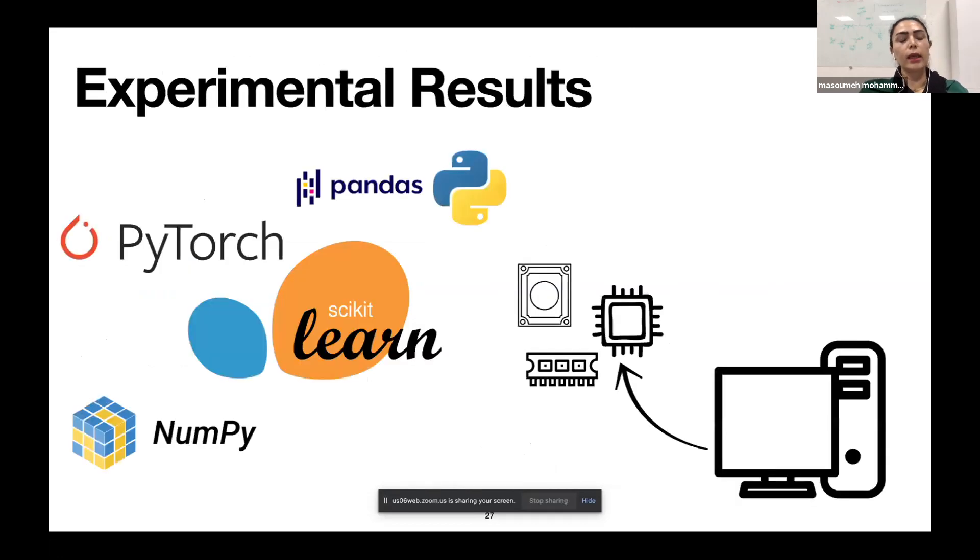Here we introduce some Python libraries which we use to implement the model such as PyTorch, Pandas, NumPy, Scikit-Learn, and about the other experimental results, we use 16 gigabytes of RAM and 500GB SSD hard drive under the Ubuntu operating system. The model was implemented in 11 minutes and 34 seconds under NVIDIA Quadro RTX 4000.